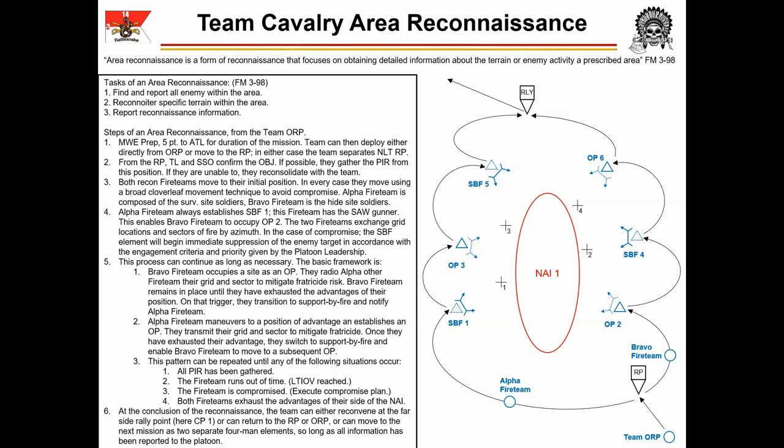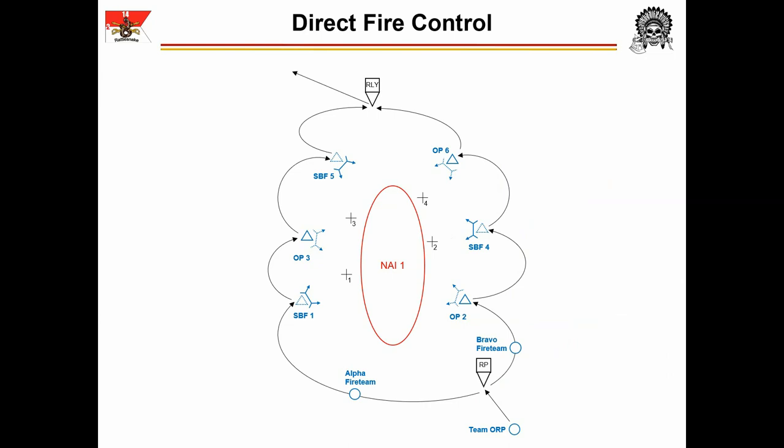As Bravo Fireteam moves into position, they radio their grid to Alpha Fireteam. The Alpha Fireteam leader, the ATL, then adjusts his team's sectors of fire to provide 15 degrees of offset from Bravo Team's position. All control measures and positions belonging to Alpha Team are on one side of the objective and labeled with odd numbers; all positions belonging to Bravo Team are on the other side and labeled with even numbers. This improves battle tracking and prevents confusion. The team may also establish TRPs prior to or during the operation, following the same odd/even numbering convention.